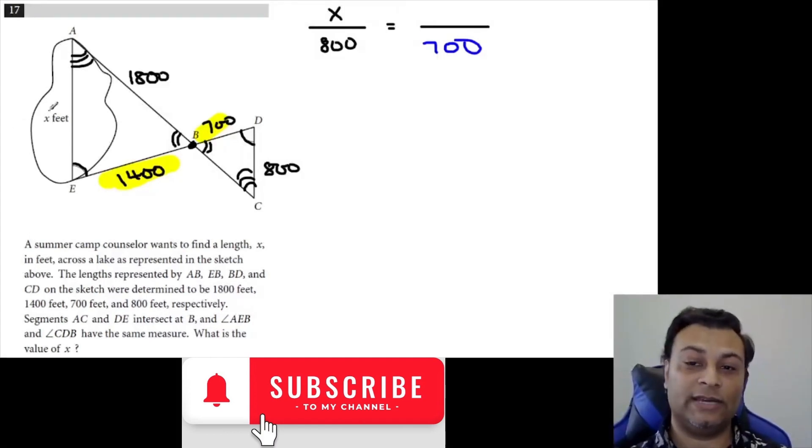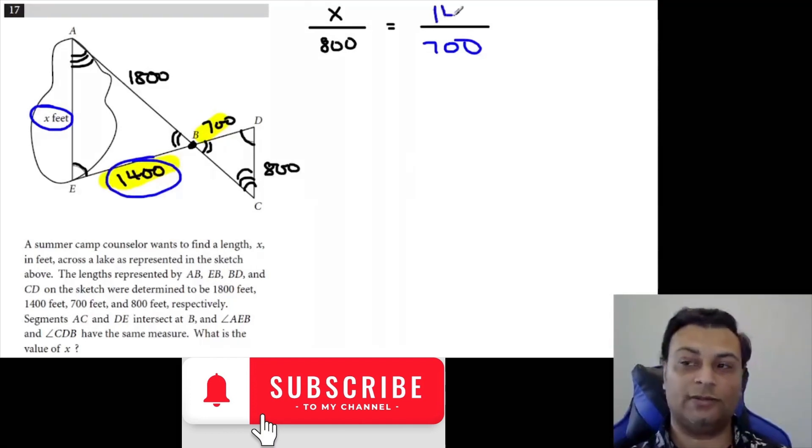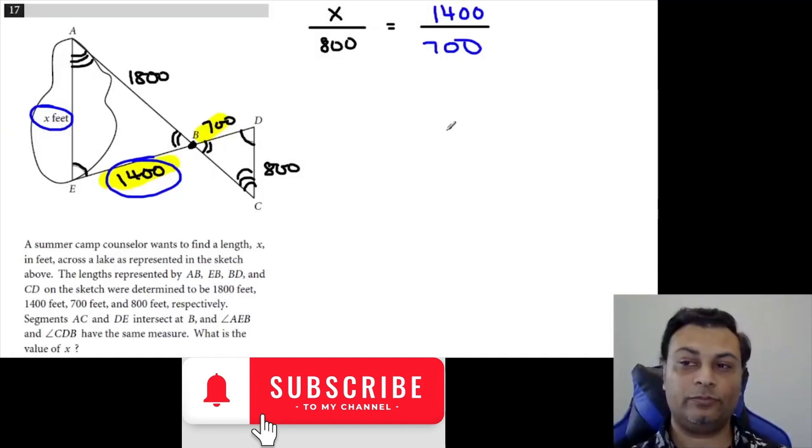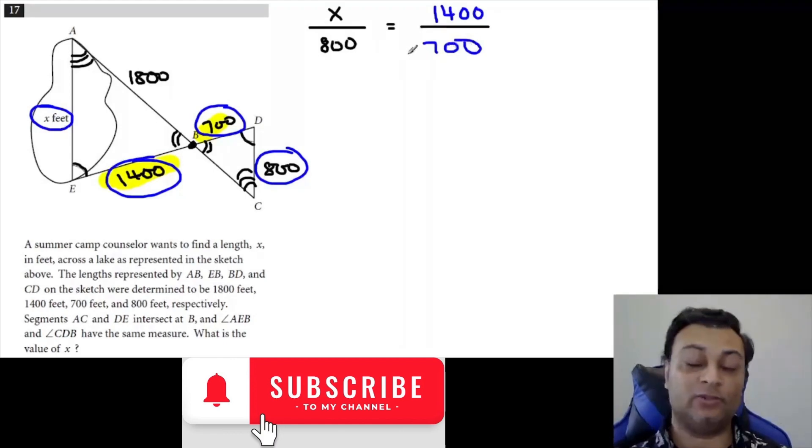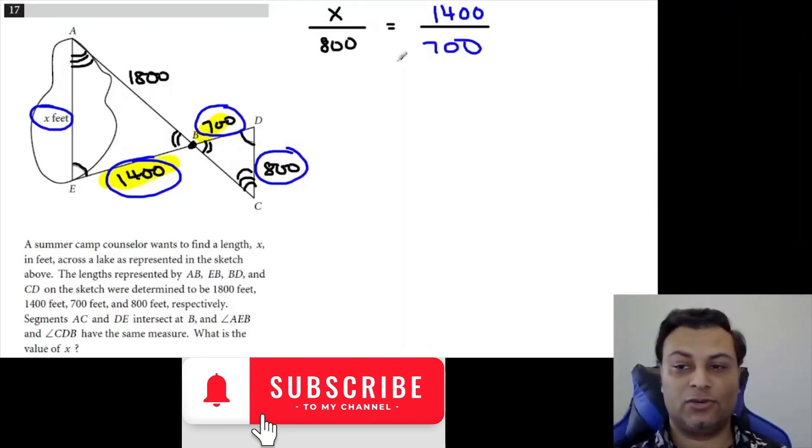We got to make sure that this X comes from... the numerators come from the same triangle. So X is from this left triangle, and 1400 between the single and double is also from the left triangle. And the denominators are from the same triangle - that 800 and that 700 in the denominators, those come from the same triangle. Okay, and 700 between the single and the double, just like 1400 between the single and the double, so those line up. Those are corresponding.